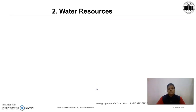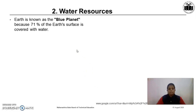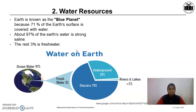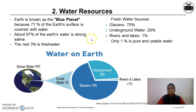The second type of natural resources is water resources. Earth is known as a blue planet because 71 percent of the earth's surface is covered with water. About 97 percent of the earth's water is saline — it is present in the sea as salt water — and only 3 percent is fresh water. Of that fresh water, 70 percent is present in the form of glaciers, 29 percent is underground water, and only 1 percent is present in rivers and lakes.